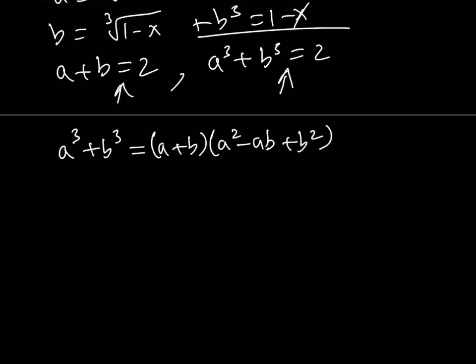It can be written as A plus B times A squared minus AB plus B squared. Great. Now, I do know that A plus B is equal to 2. So, I can go ahead and substitute that. So, both of these are 2. So, this is equal to 2. This is equal to 2, which implies that this must equal 1. Great.